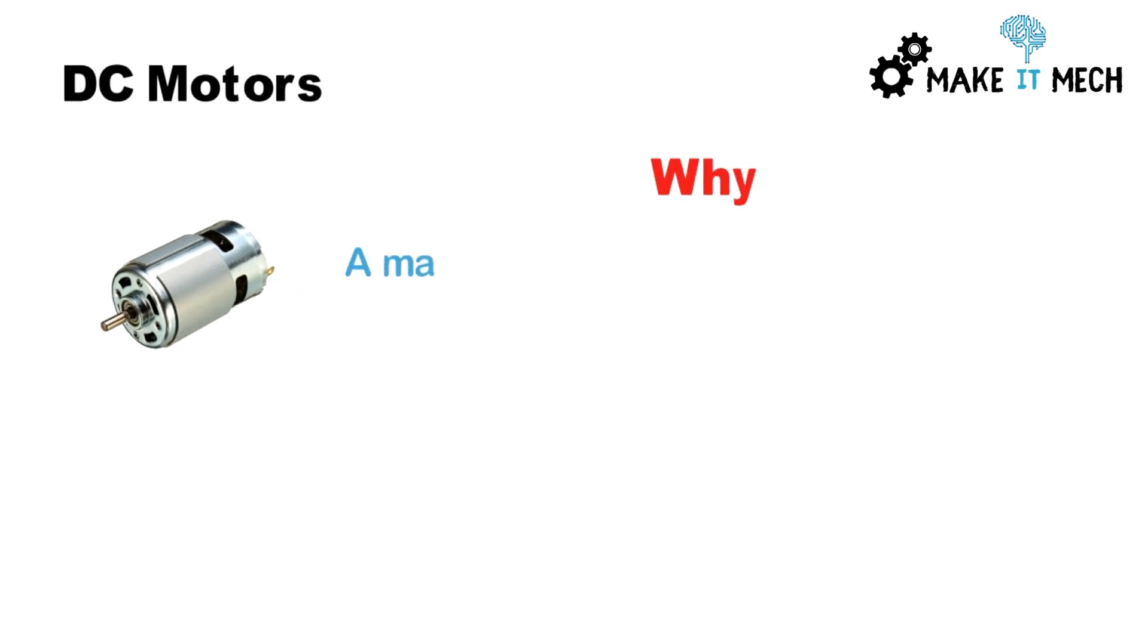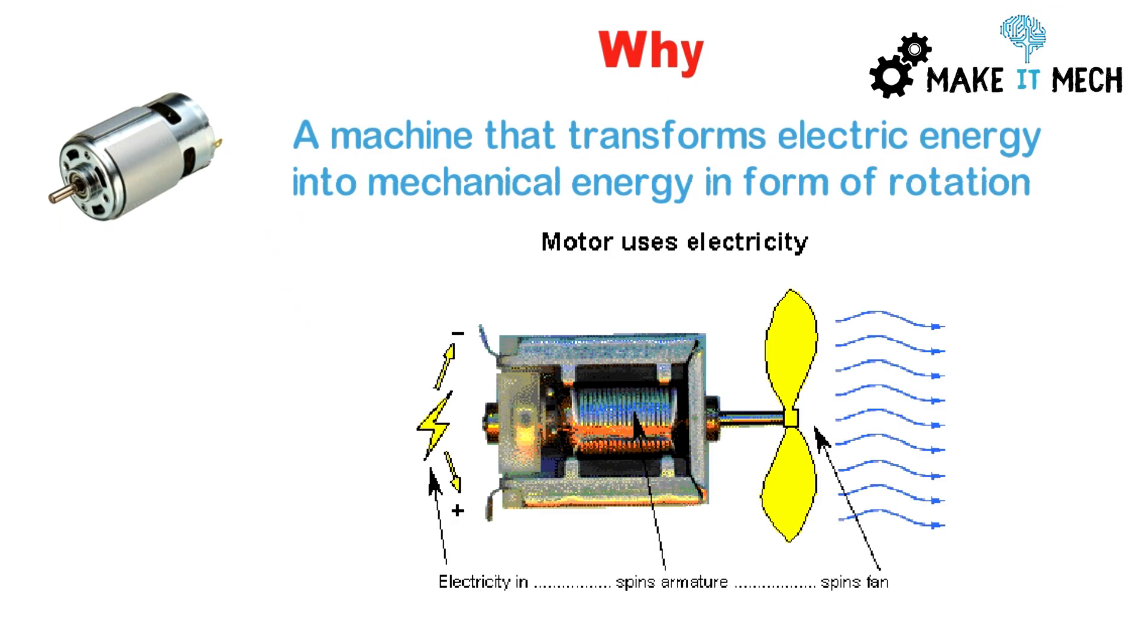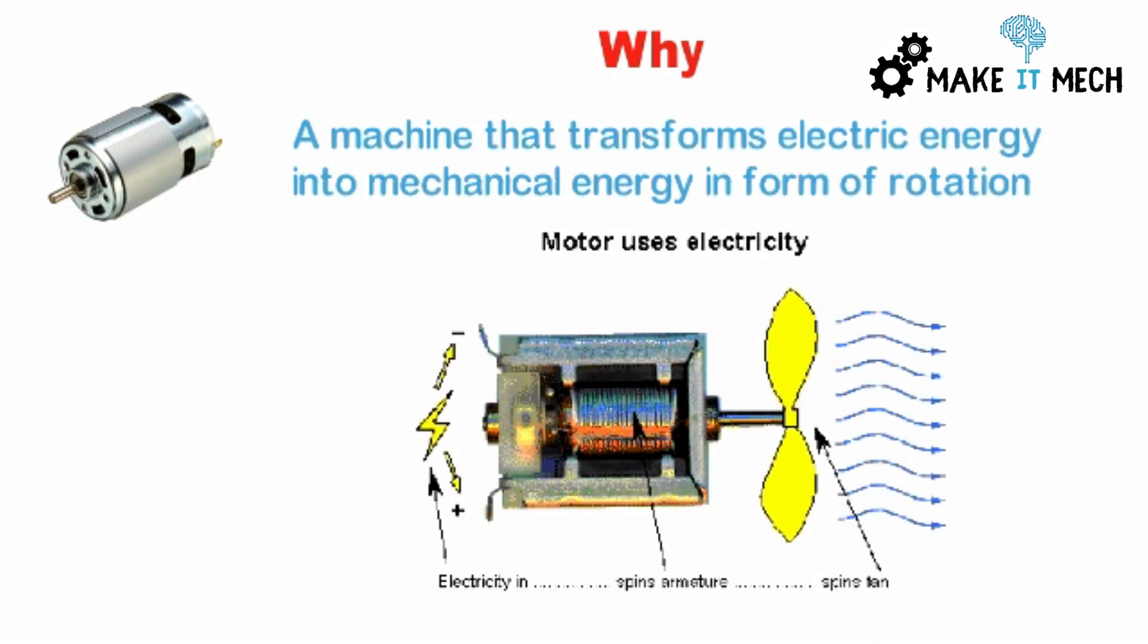Why we use DC motors? A DC motor is a machine that transforms electrical energy into mechanical energy in the form of rotations. The internal structure of the motor is designed in a way that when electrical energy is provided to the motor, it rotates and converts that electrical energy into mechanical form.